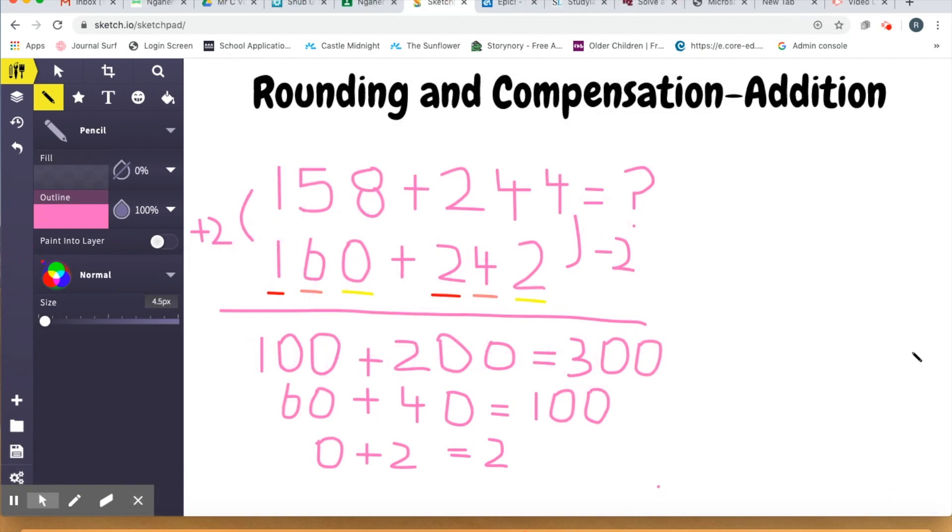Now our next example for rounding and compensating for addition is a slightly harder question. I haven't done it in a word problem, just because I wanted to crank through it quite quickly. So this time I've got 158 plus 244. When I look at this question, the first strategy that jumps into my mind is going to be place value partitioning. But before I do place value partitioning, I'm going to use rounding and compensating to make it a little bit more straightforward when I get to that stage.